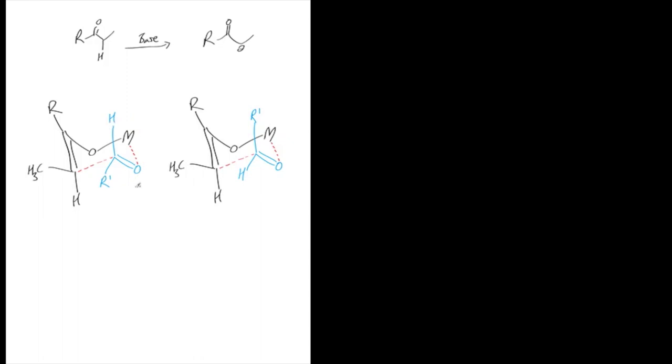So I put the attacking species, the aldehyde or the ketone, right at the front there like that. I draw a chair conformation, I put the metal at the back in the top right hand corner and then I just draw the enolate whether it's an E or a Z.